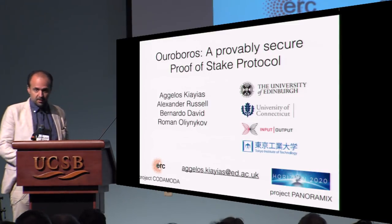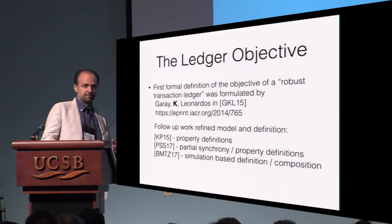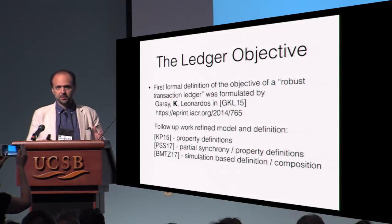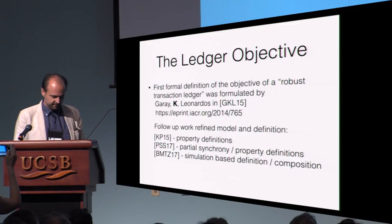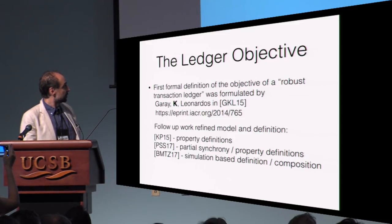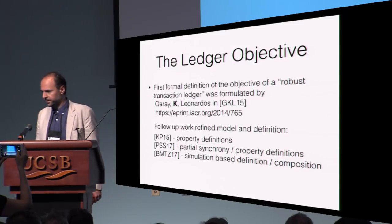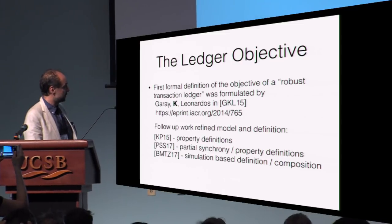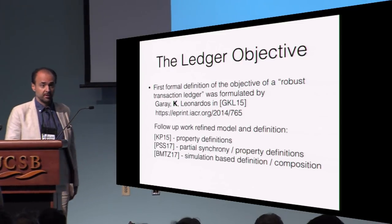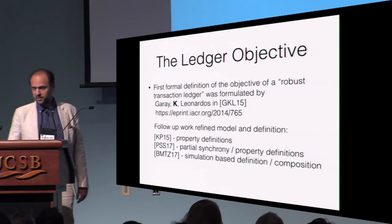You heard in this session a lot about the ledger objective — the goal is to construct a protocol that realizes a robust transaction ledger. This was the objective of a paper by Juan Caray, myself, and Leonardo in GKL, where we formalized this definition. That work gave rise to follow-up work refining the model and definition, and we now have a simulation-based definition which is composable.